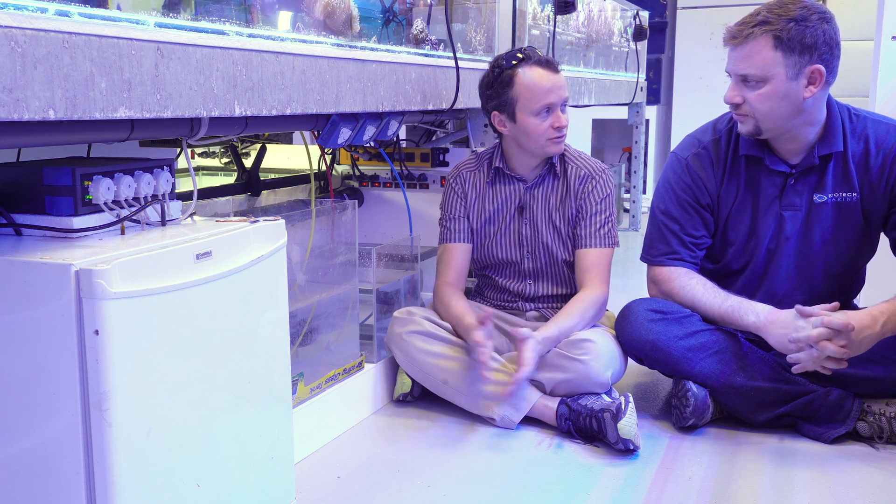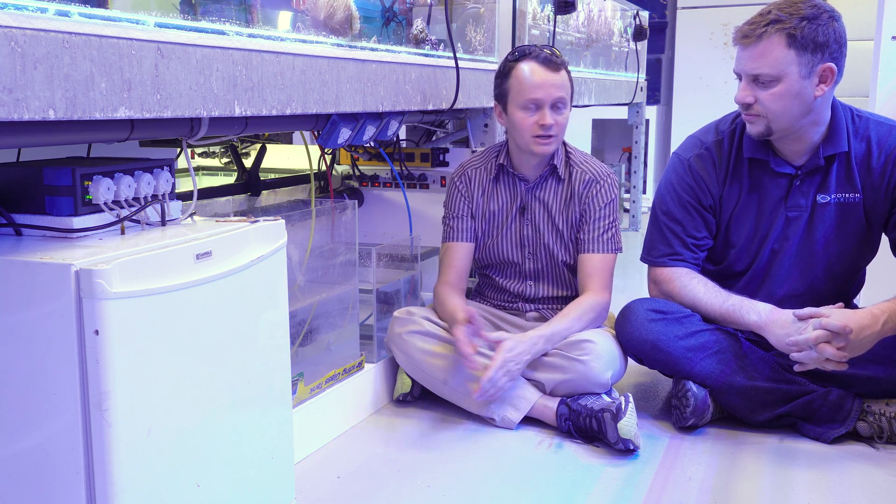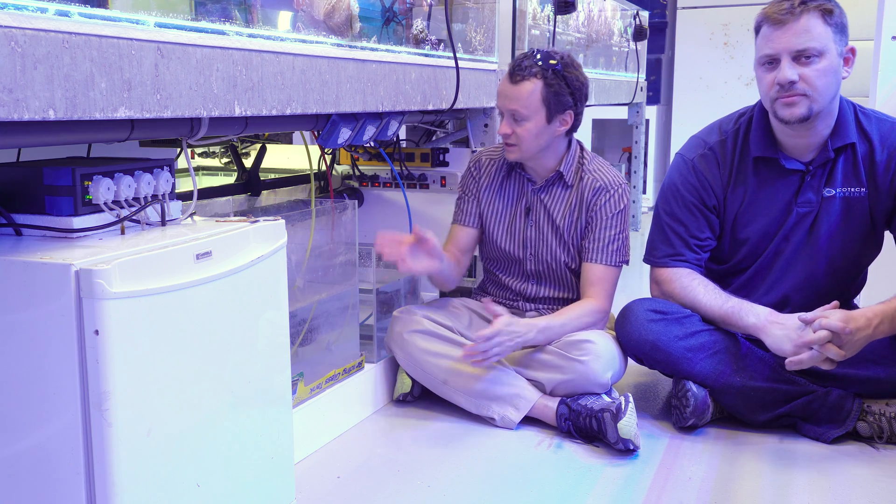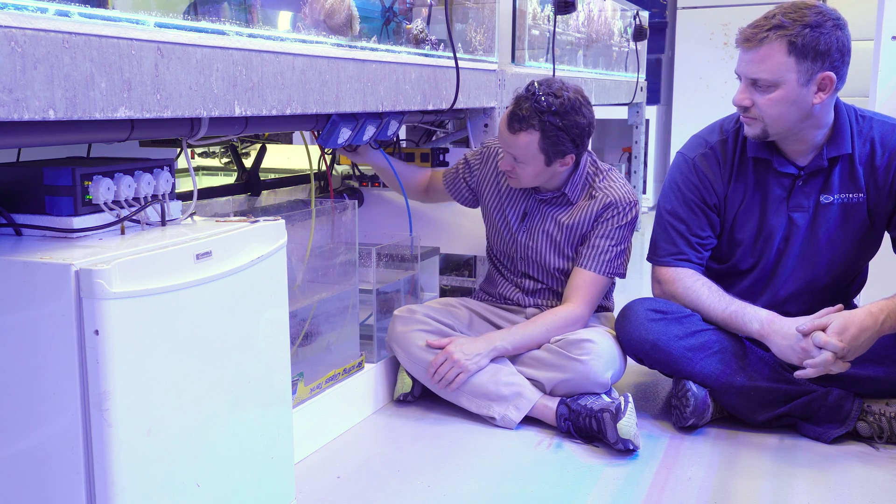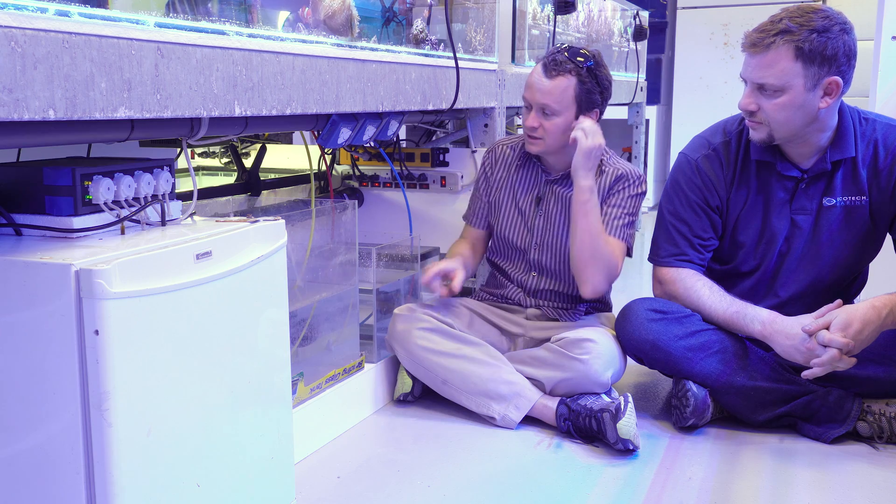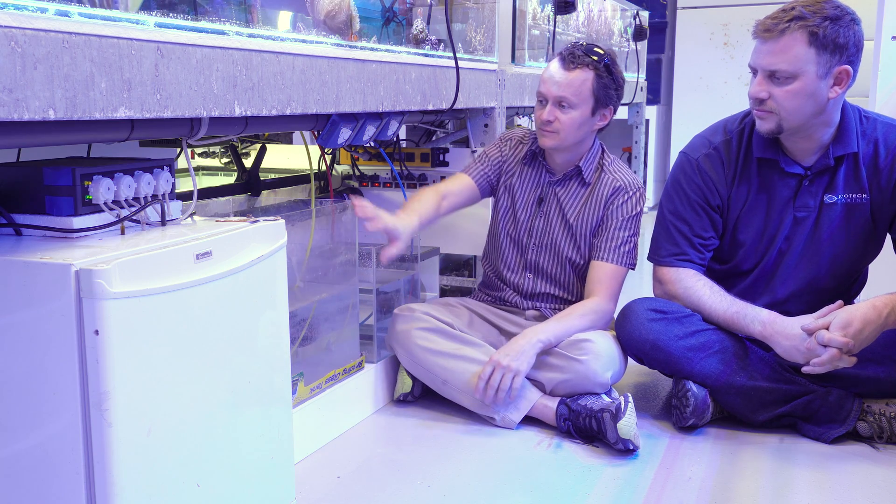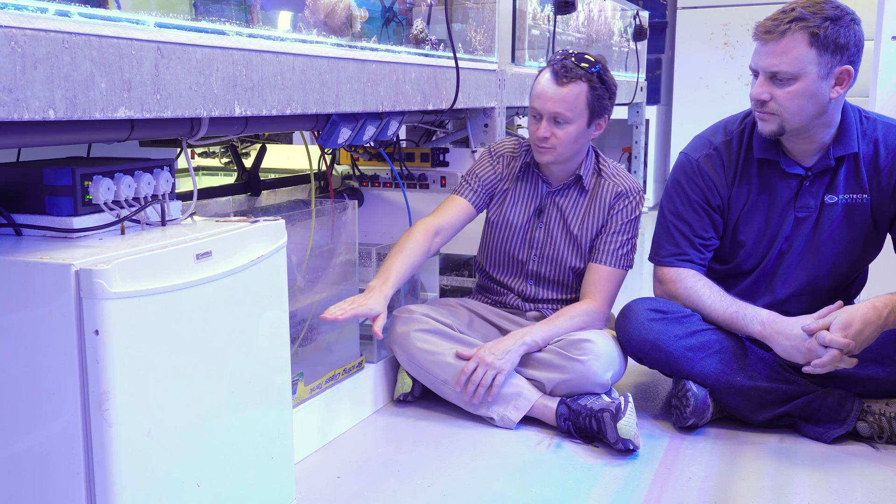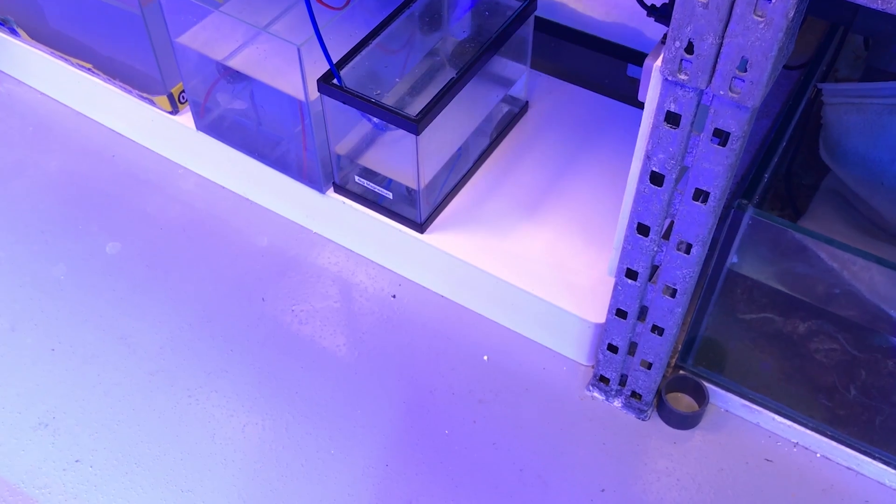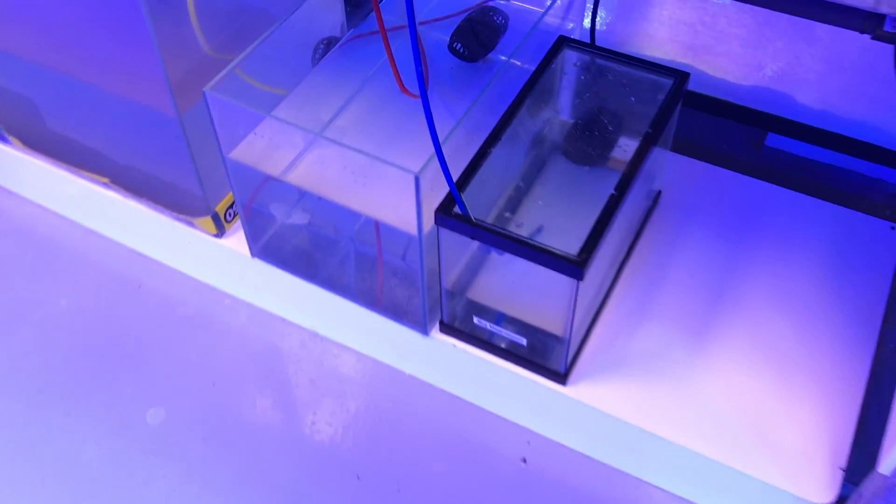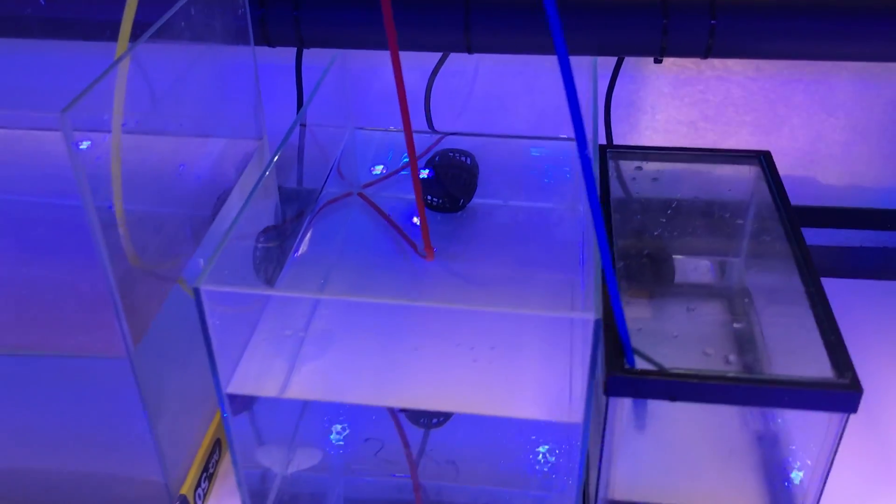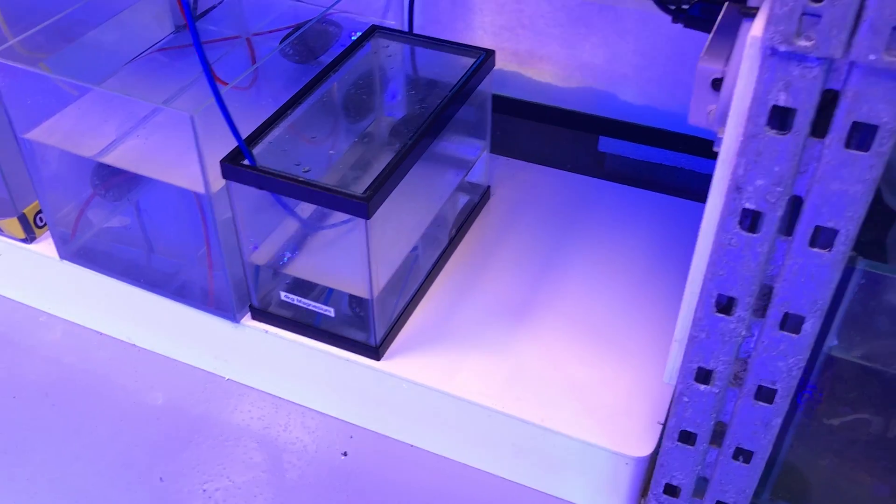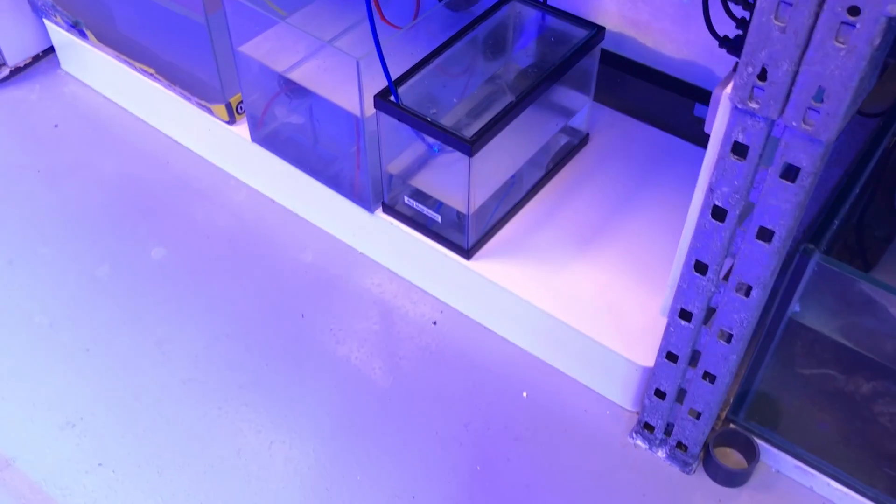So we test our alkalinity every day. We test our calcium Monday, Wednesday, and Friday. And to maintain our levels, we have a dosing pump which is actually up here, and we have our dosing containers. Our alk container is around 20 gallons. We put our alkalinity in here, fill it up with RO/DI water. Our calcium goes in here—it's about a 5-gallon container with 2 kilos of calcium—and a little 2.5-gallon container with 4 kilos of magnesium.